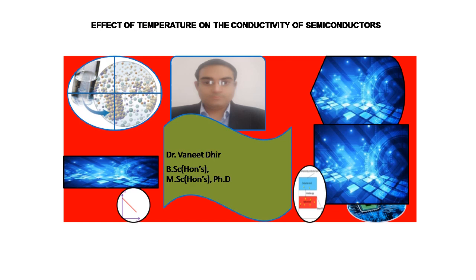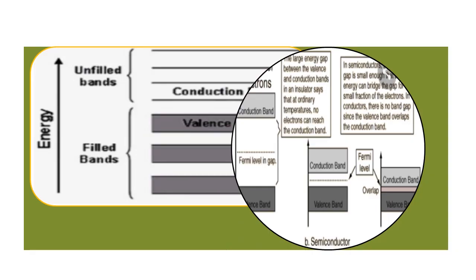We all know what would happen in case of conductors — conductivity decreases. This picture will provide you a diagram of valence band and conduction band. In case of conductors, the gap is less.